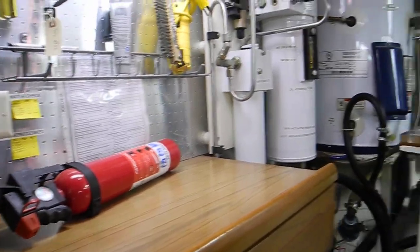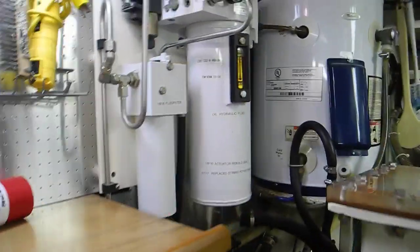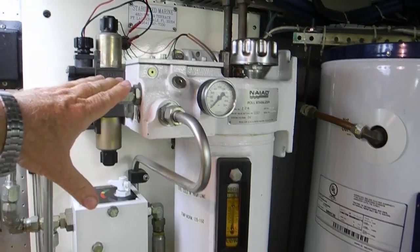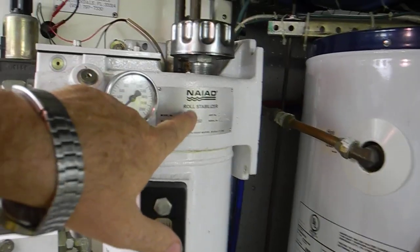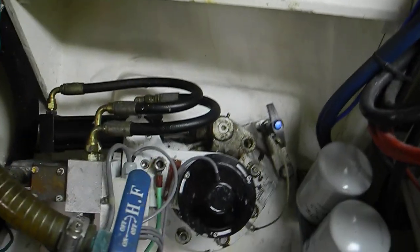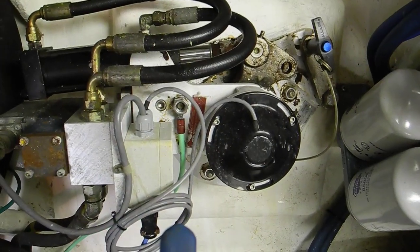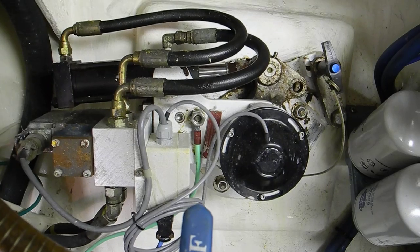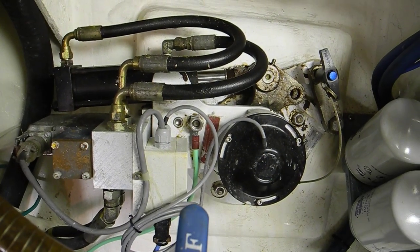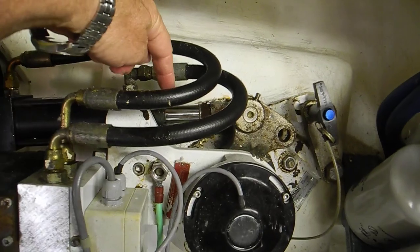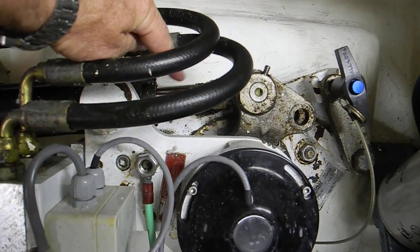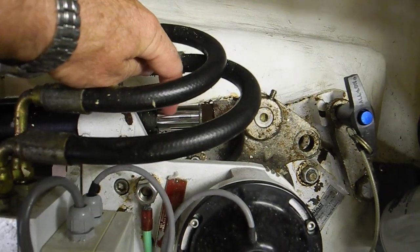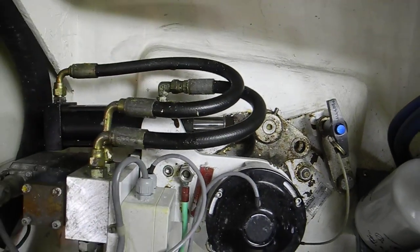Looking back to the starboard side, you can see this big hydraulic system right here. This is for the NIAD stabilizers, and here is one of the heads for the stabilizer. These are known as active fin stabilizers and they move back and forth. You can see this shiny hydraulic ramrod right here. That's what moves back and forth.